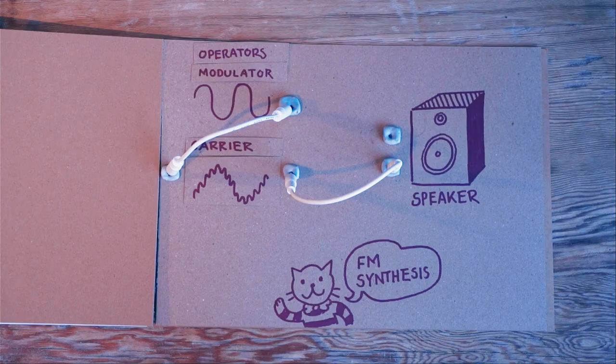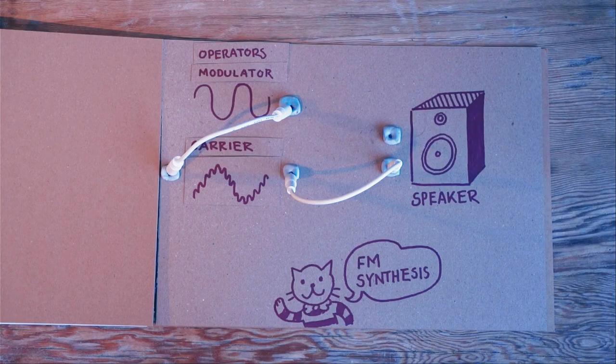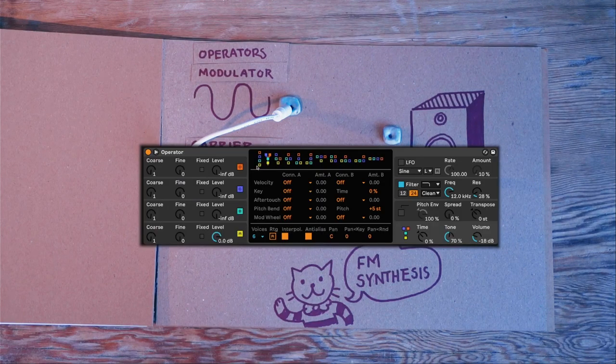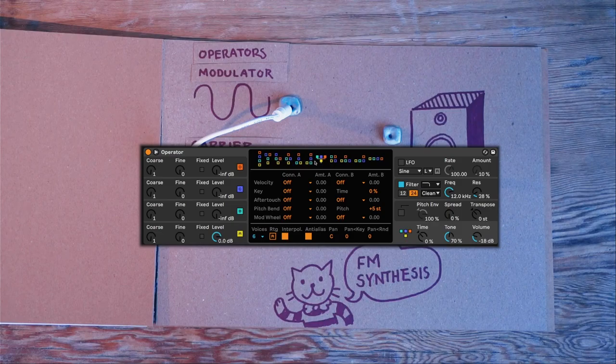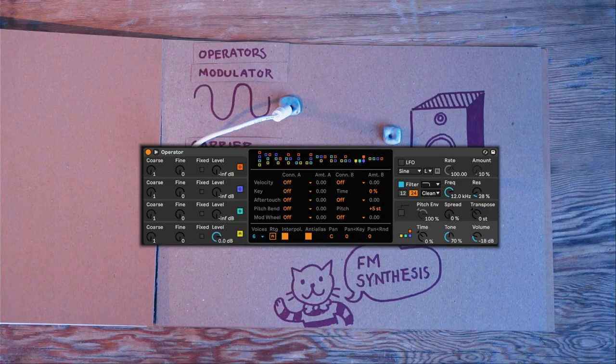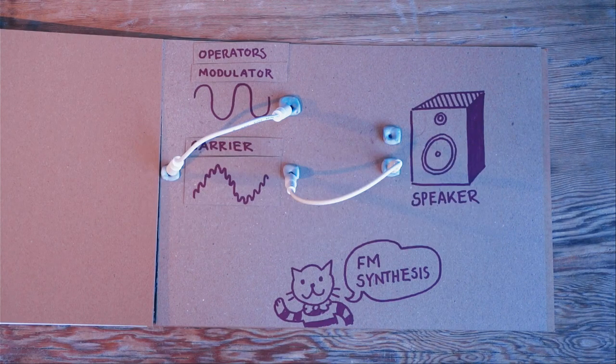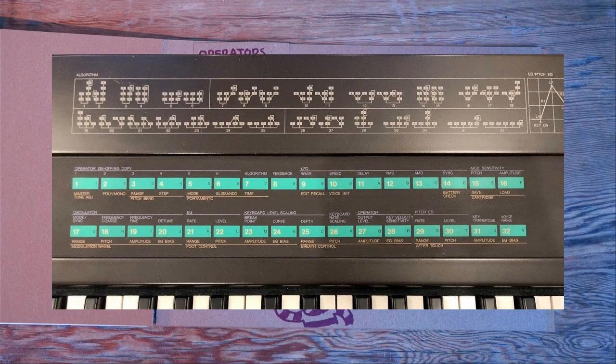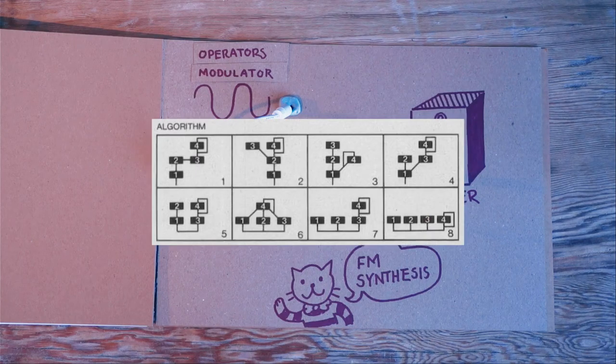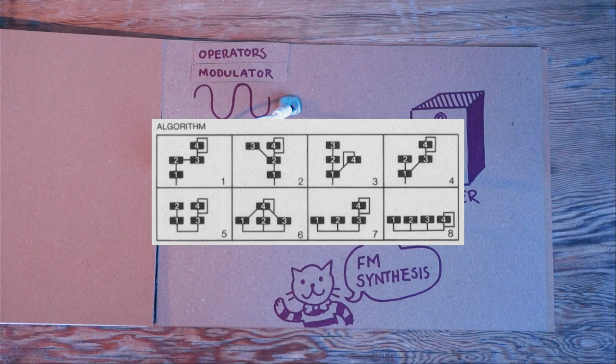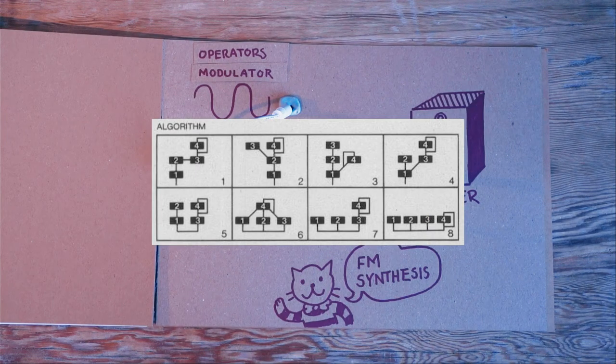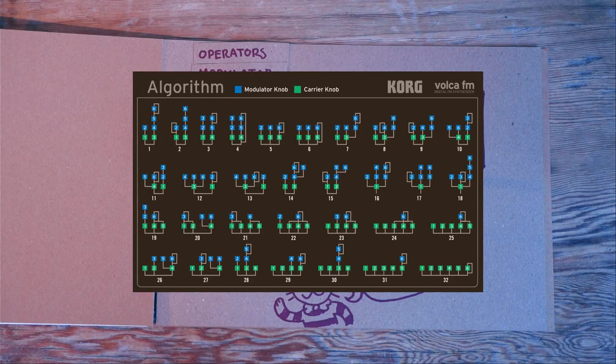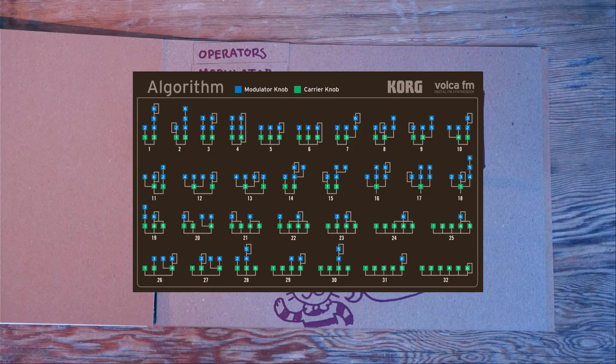There's one more thing I would like to say that will hopefully help you on the way. The so-called algorithms. You might have seen these little boxes. They're down here in the operator. This is what they look like on the DX7. And that basically just explains in what order these different oscillators are connected to one another. So you can see which one is the carrier and which ones are the modulators and which ones are sort of feedbacking into one another.